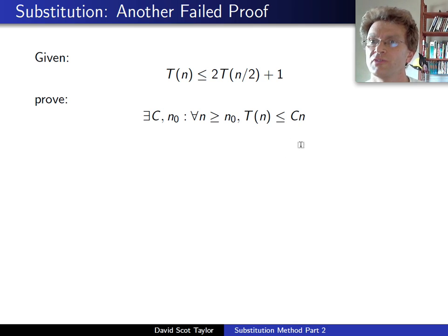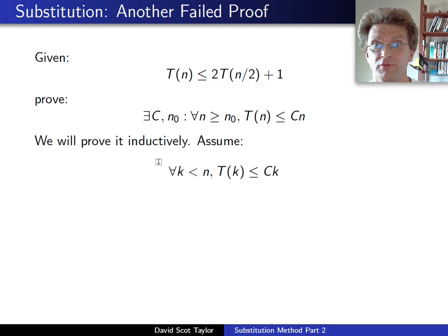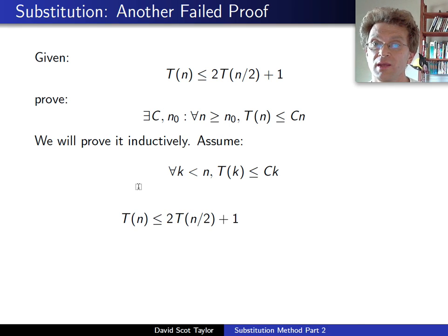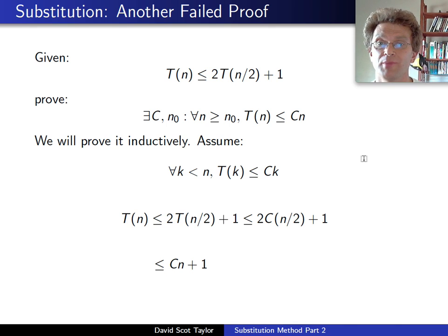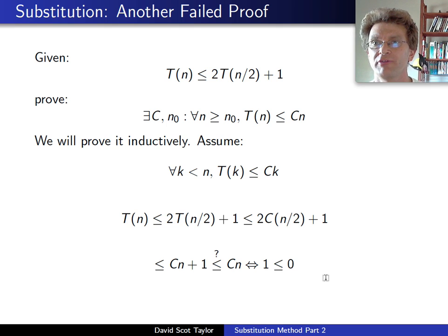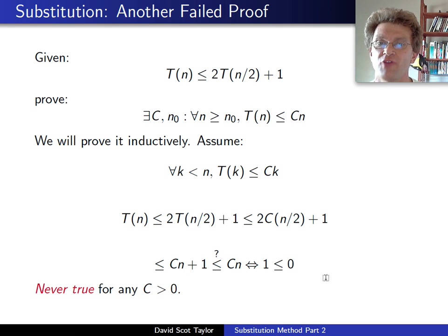For some constant c and sufficiently large n. So we're going to try to prove it inductively — we assume that for all k less than n, t(k) ≤ c·k. We take the recurrence relation, plug in: since n/2 is less than n, we can apply induction, and after some algebra we're left trying to prove c·n + 1 ≤ c·n. That's true if and only if 1 ≤ 0, which is never true, no matter what c you have. So that proof fails.